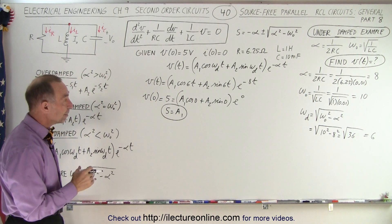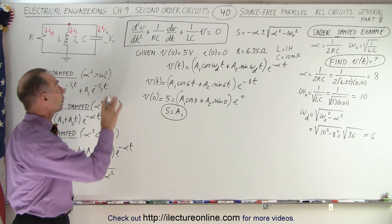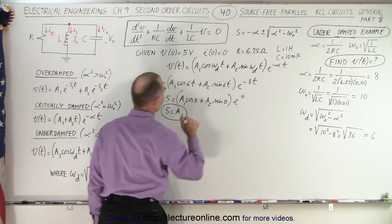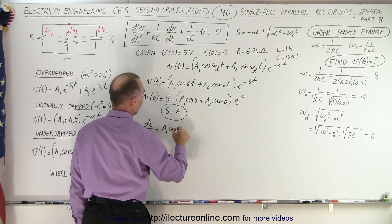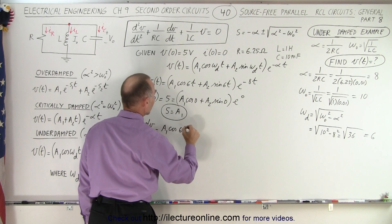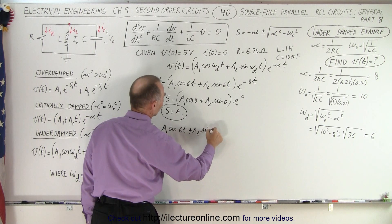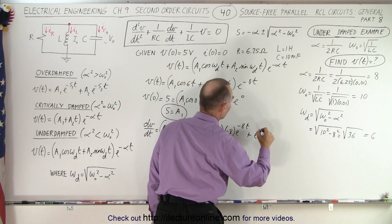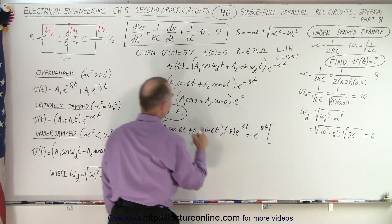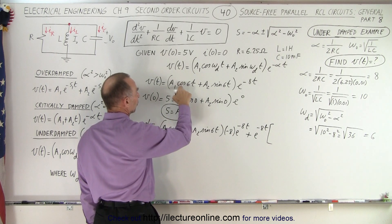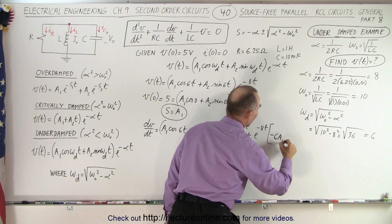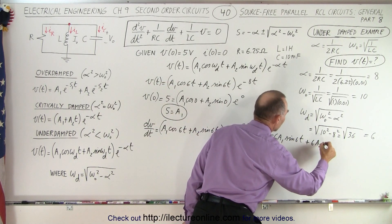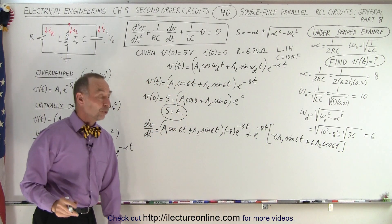To find A2 we need the derivative of the voltage, dV/dt. Using the product rule: the derivative of the first term times the second plus the second times the derivative of the first. That gives us A1 cosine(6t) plus A2 sine(6t) times negative 8 e to the minus 8t, plus e to the minus 8t times negative 6A1 sine(6t) plus 6A2 cosine(6t).